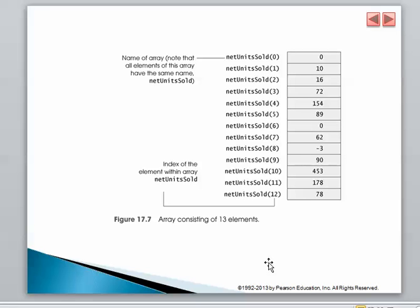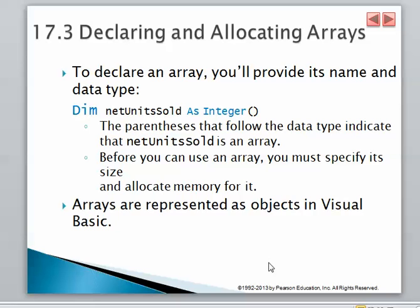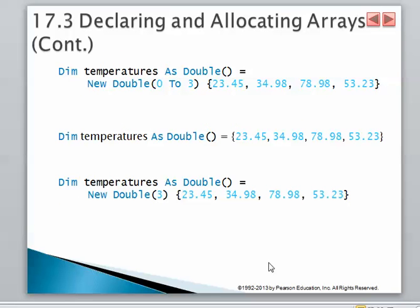Now what else do we need? We need to know how we're going to declare arrays. We're going to declare arrays just like other variables. We're going to say Dim, name of the array, as Integer. The only difference is now that we're going to have that opening and closing parenthesis, that's going to say that it's going to have multiple values. Now how can we specify how many?